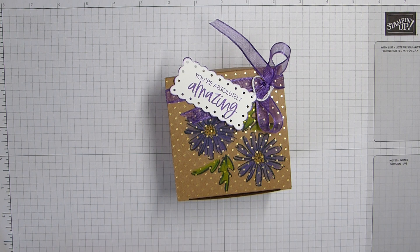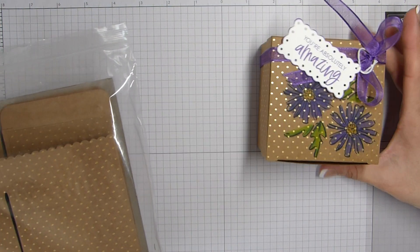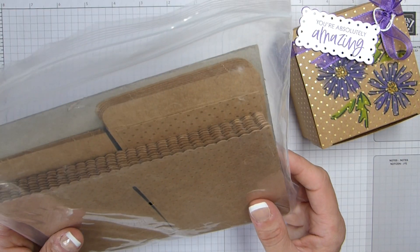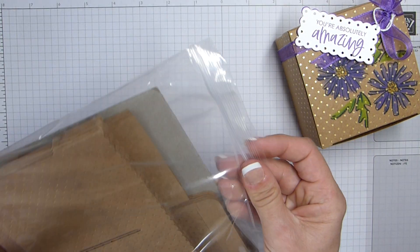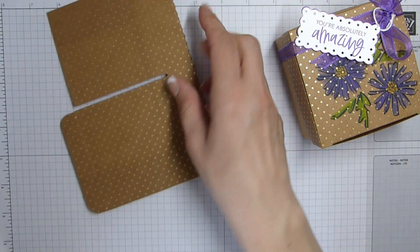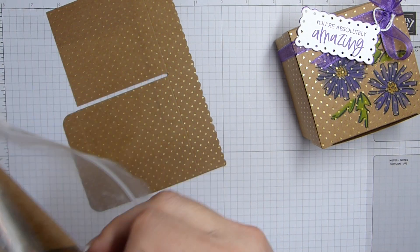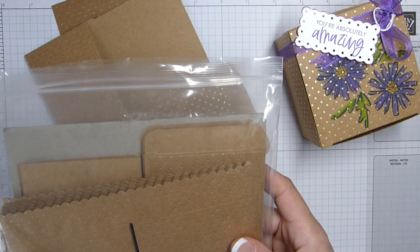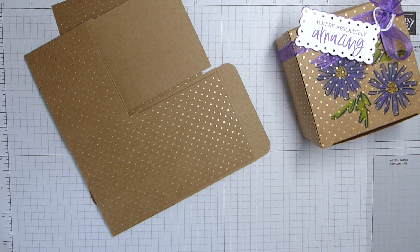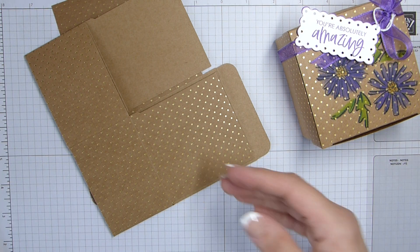We have the beautiful Scalloped Craft Treat Boxes. You get a pack of eight. They come flat packed and you have a lid and a base. So they are super fun. You can adhere them together or you could leave them as I have.